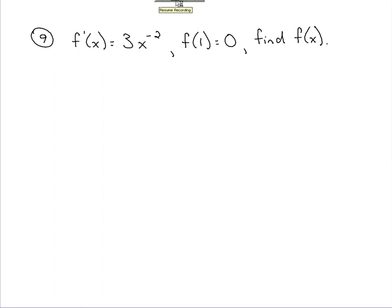So, f prime of x equals 3x to the negative second. Focusing in on the derivative function, if you take the antiderivative of the derivative function, we get the original function f of x back.